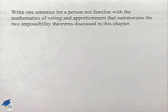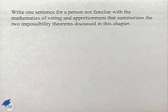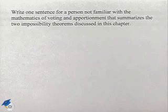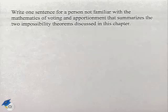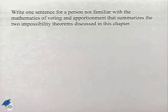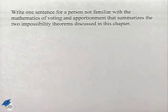Now let's look at the impossibility theorems. Write one sentence for a person not familiar with the mathematics of voting and apportionment that summarizes the two impossibility theorems discussed in this chapter.